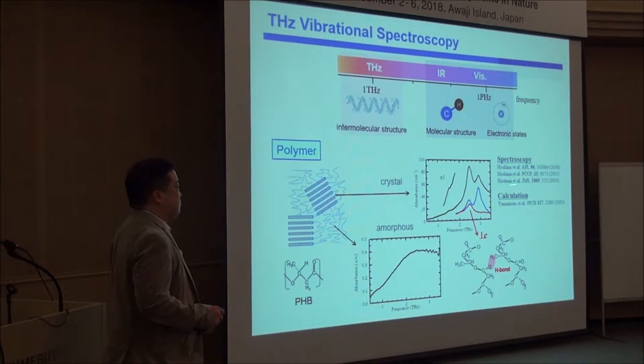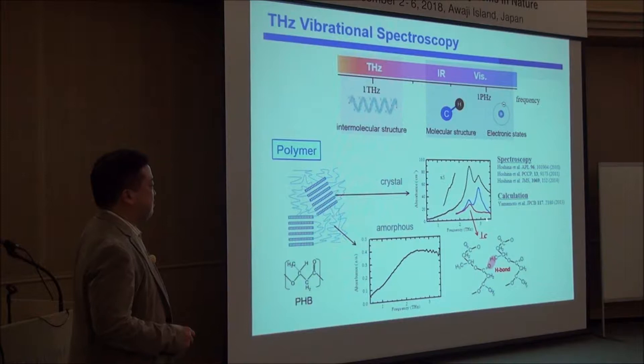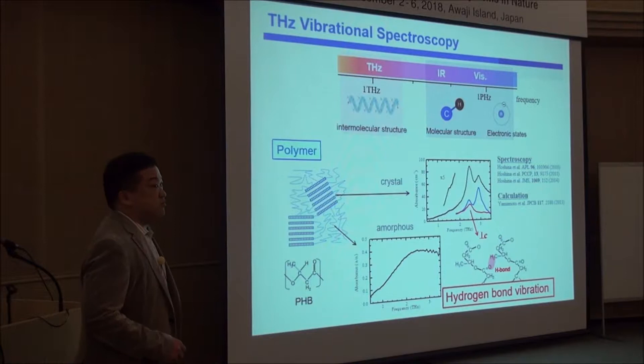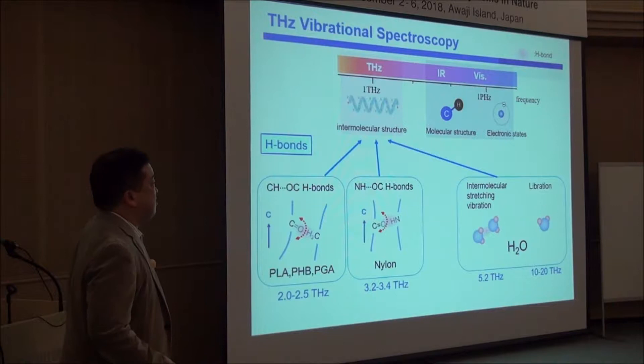In this decade we have been studying such polymer spectra, and we developed spectroscopic techniques as well as calculation techniques for the assignment of such spectra. For example, this band corresponds to a specific vibrational mode. We found that in such polymers we often see the vibration of hydrogen bonds.